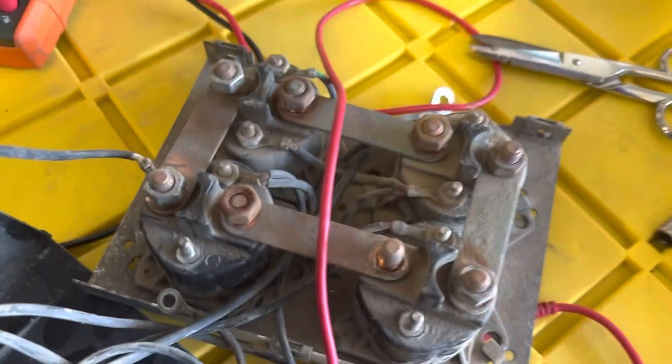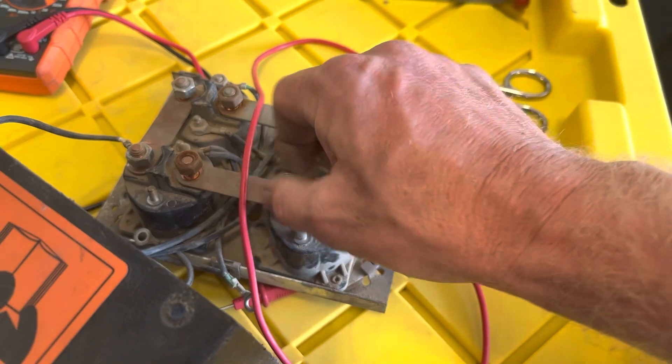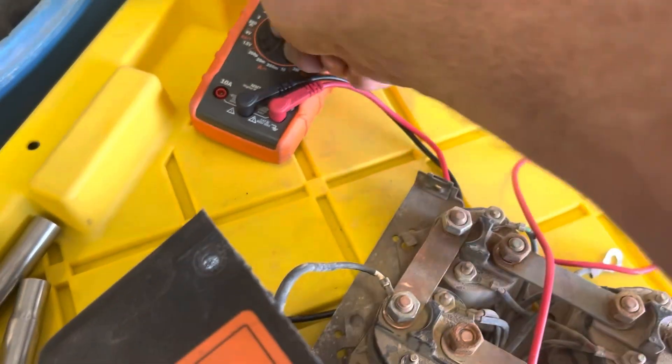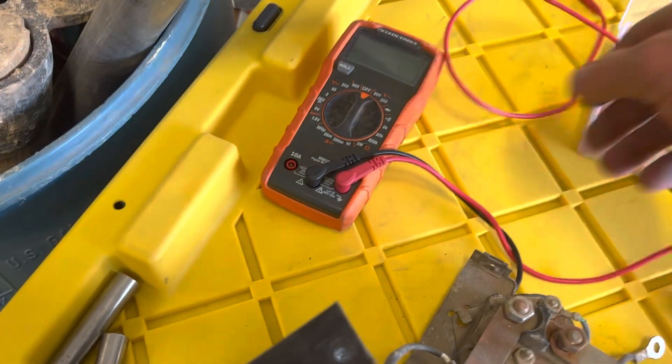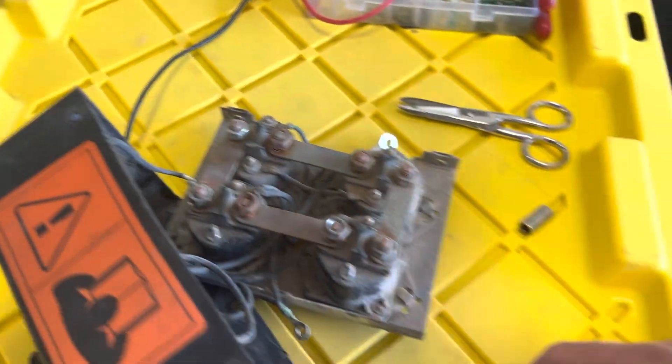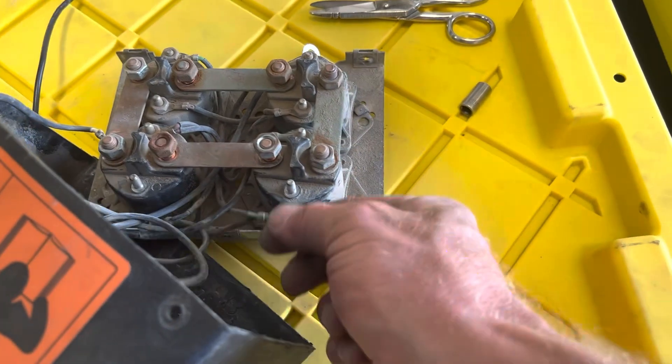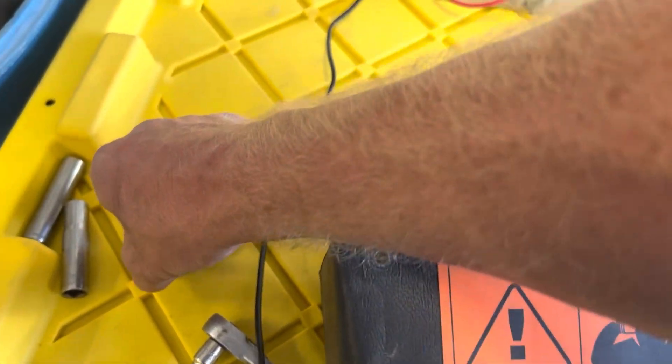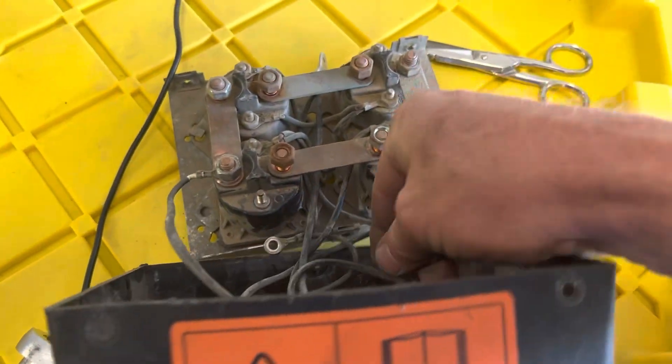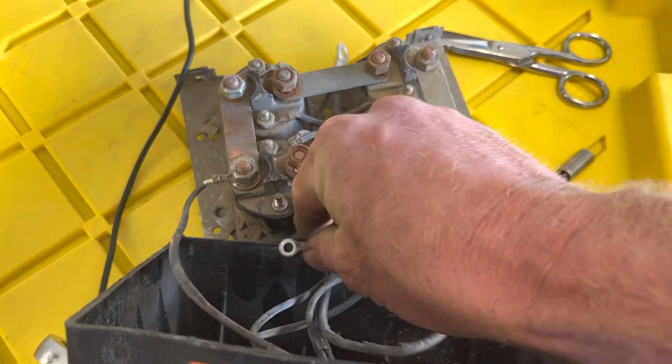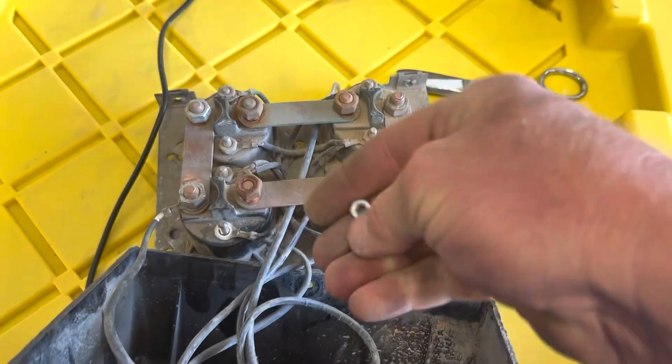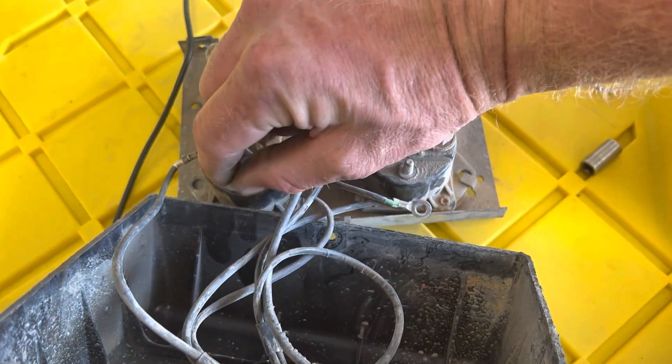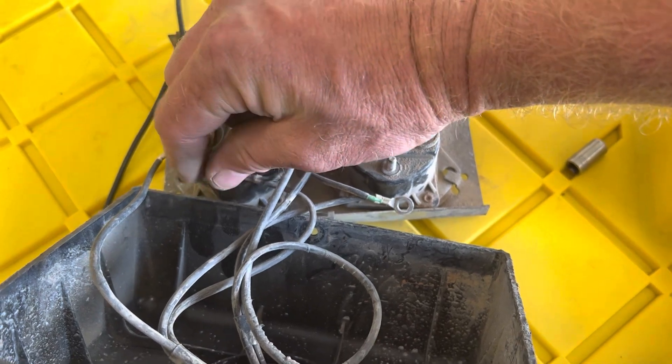So there you go. That's how it all goes back together and how you test it with a multimeter. Honestly you don't need an expensive multimeter. You're not putting a big load to it. You're just testing if the circuit opens and closes. You may have a bad one that is partially opening or closing with some resistance. In my case it was completely inactive. It wasn't moving at all. So that's it. Thanks for watching.